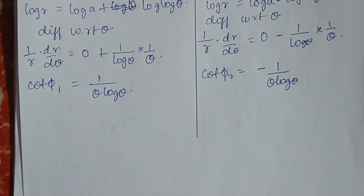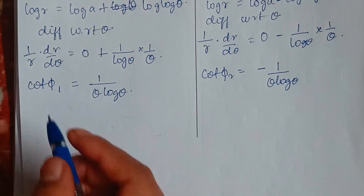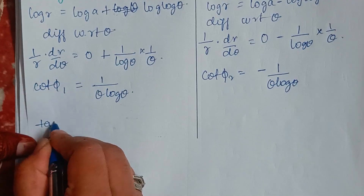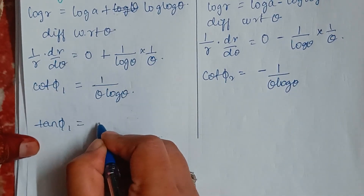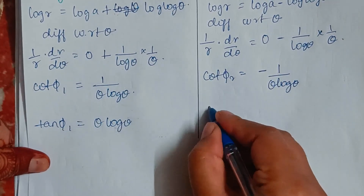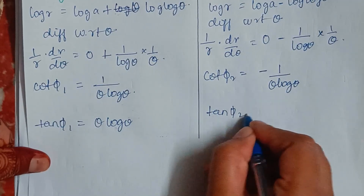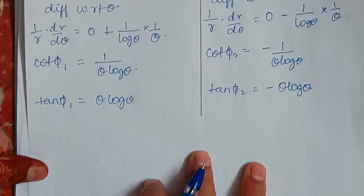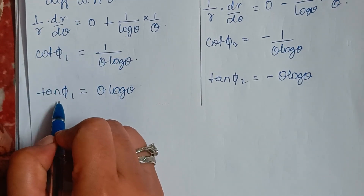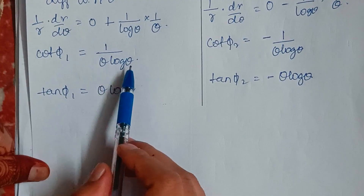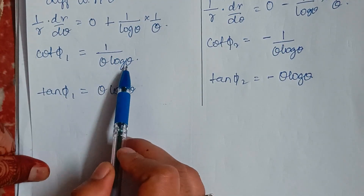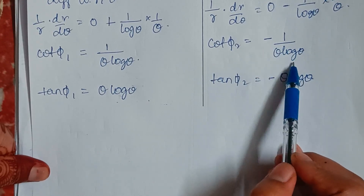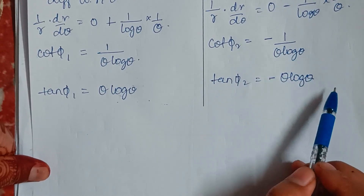Now I will write these in terms of tan. Since tan is the reciprocal of cot, tan φ₁ equals θ log θ and tan φ₂ equals −θ log θ. The reciprocal of 1/(θ log θ) is θ log θ, and the reciprocal of −1/(θ log θ) is −θ log θ.